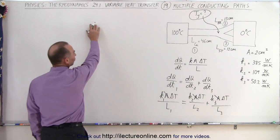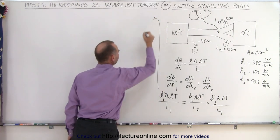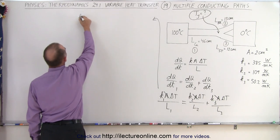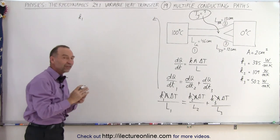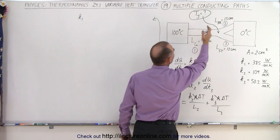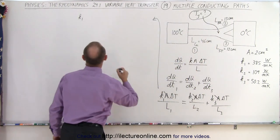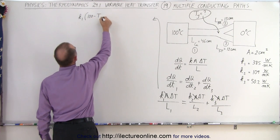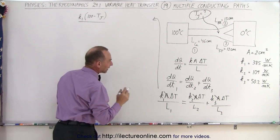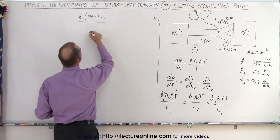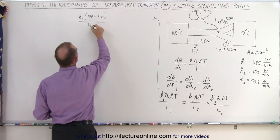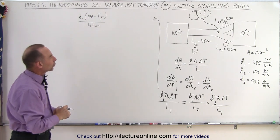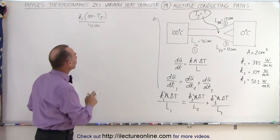On the left side, we have K1 times the temperature difference, which is 100 minus the junction temperature we're looking for. We'll write this as 100 minus T_J for the junction temperature, divided by the length, which is 46 centimeters. We can use centimeters instead of meters because they'll cancel out on both sides of the equation.